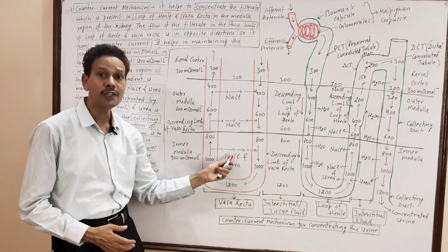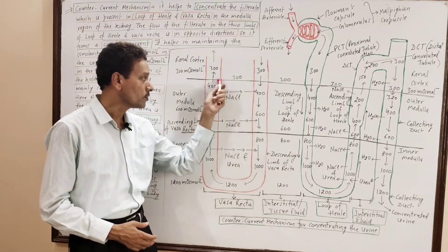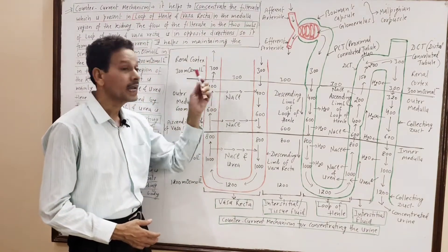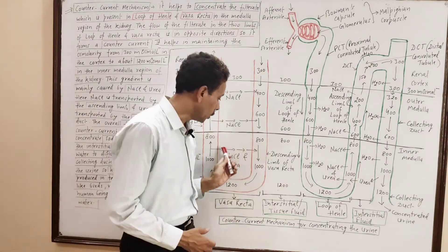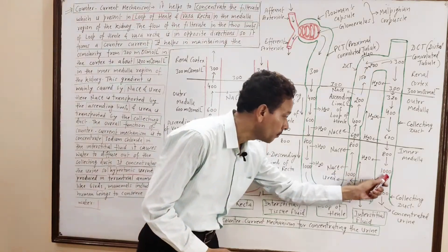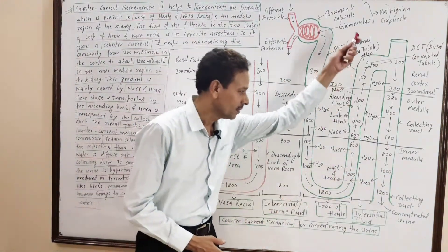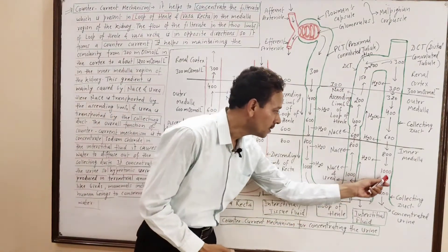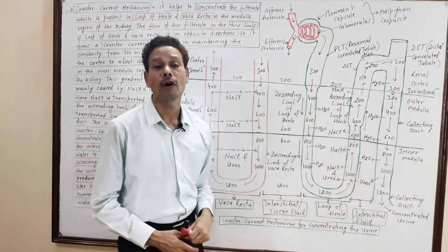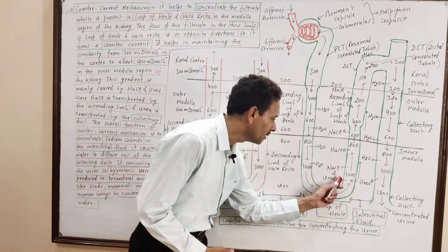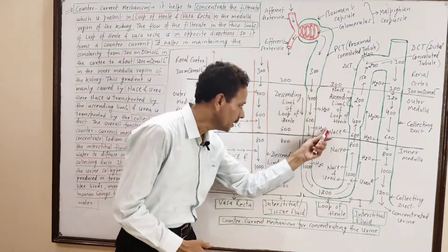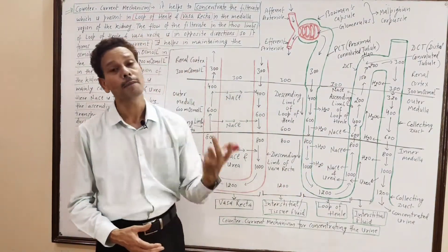Sodium chloride is transported into the interstitial fluid by the ascending limb. Urea is also present in this tissue fluid and is transported by the collecting duct. This urea enters the thin segment of the ascending limb of the loop of Henle and finally passes into the tissue fluid, making the interstitial fluid concentrated and hypertonic.